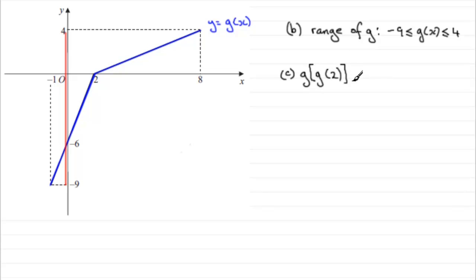It's g of g of 2. So what is g of g of 2? This g is the one on the outside here. The g of 2 will be when x is 2, you can see that you get 0. So it's going to be g of 0.